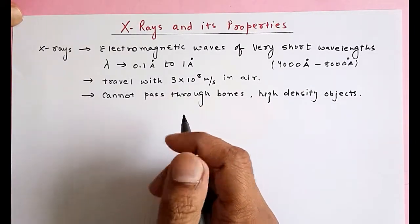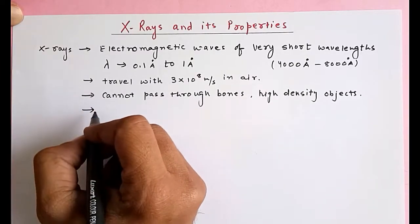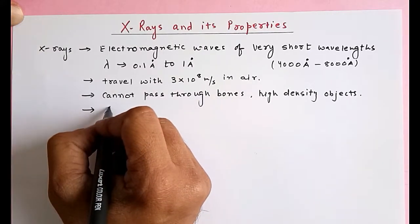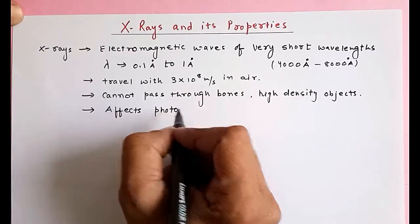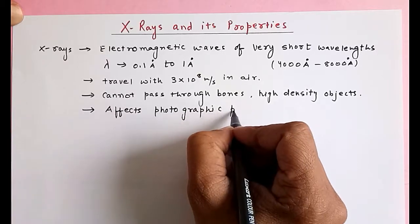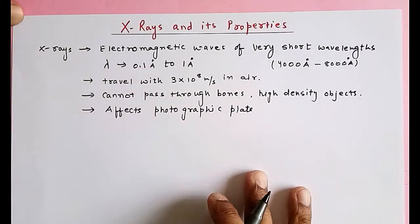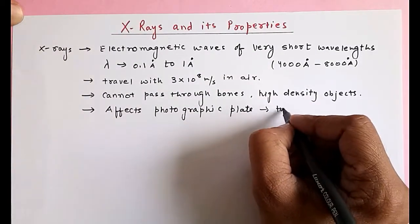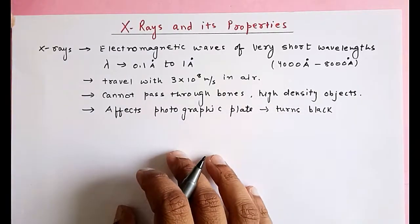They affect the photographic plate as well. The photographic plate is generally white in nature like this sheet and turns black when X-rays fall on it.